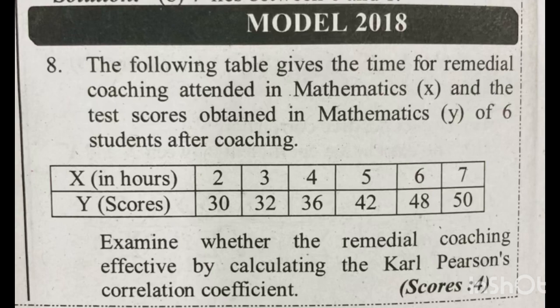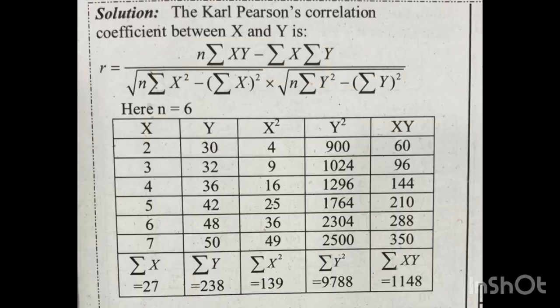Karl Pearson's Correlation Coefficient is used when we have two variables, x and y, and we want to check the relation between them. We check for perfect positive, perfect negative, positive, negative, and zero correlation. We will now check the equation — the Karl Pearson's Correlation Coefficient formula.